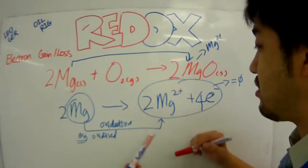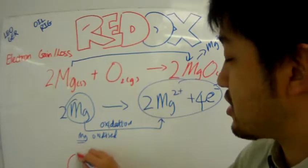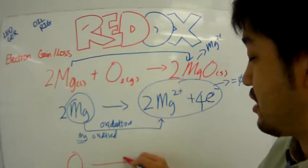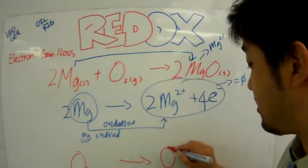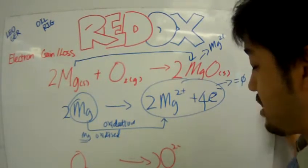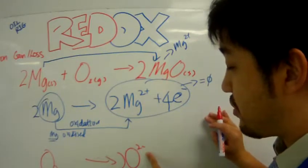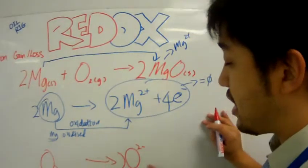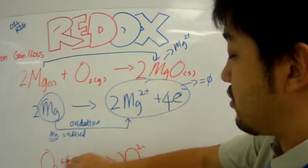And so, on the other hand, what will have happened is oxygen here became an oxide. It became an oxide. And so, what needs to happen is that the oxygen here gained how many electrons? It gained four electrons.